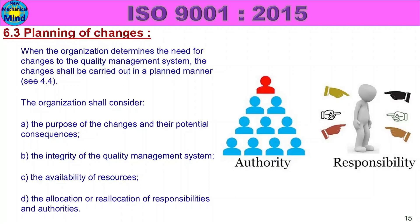This should be carried out by the authority. So, 6.3 — Planning of Changes: for one company's quality management system, any changes shall be carried out in line with the quality management system. The changes shall be carried out by the authority management system.